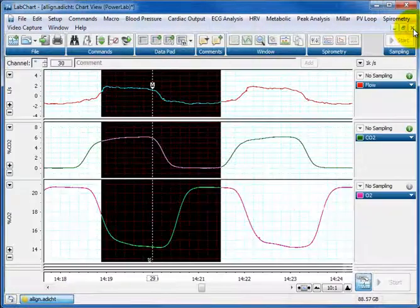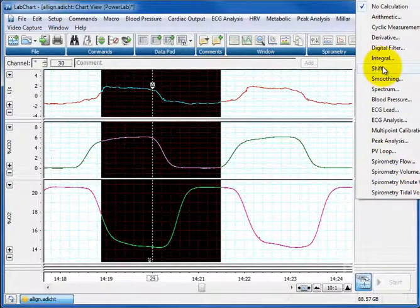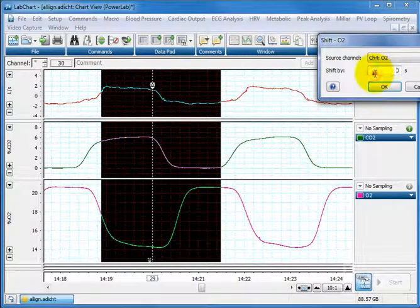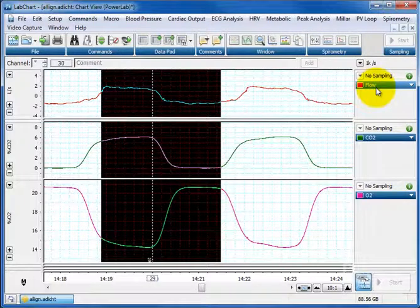I use the drop down window of the O2 and I choose the word shift. I then type in minus 0.254 seconds and press go, and you can see immediately on the screen it has shifted the O2.